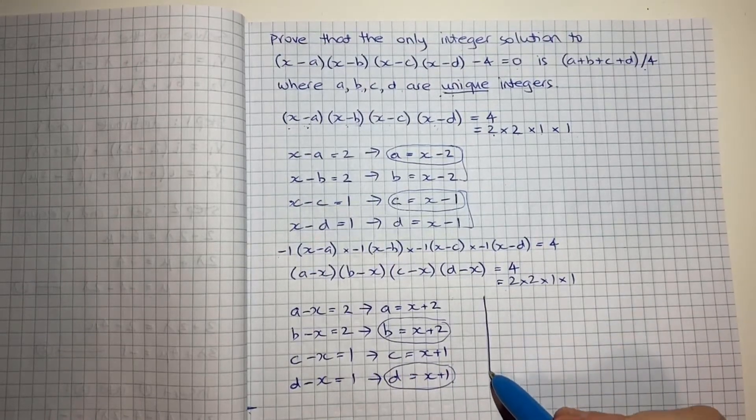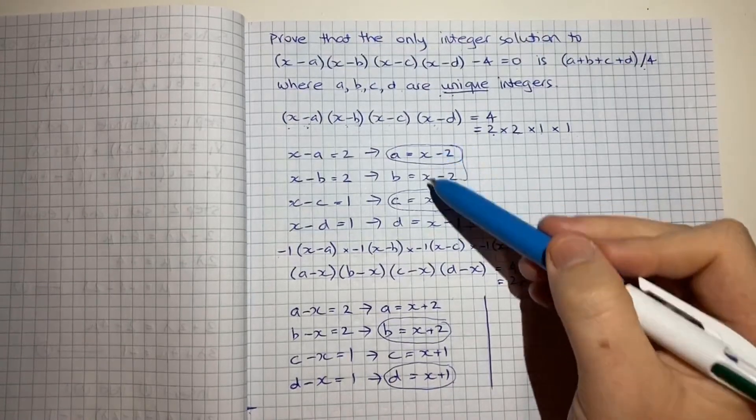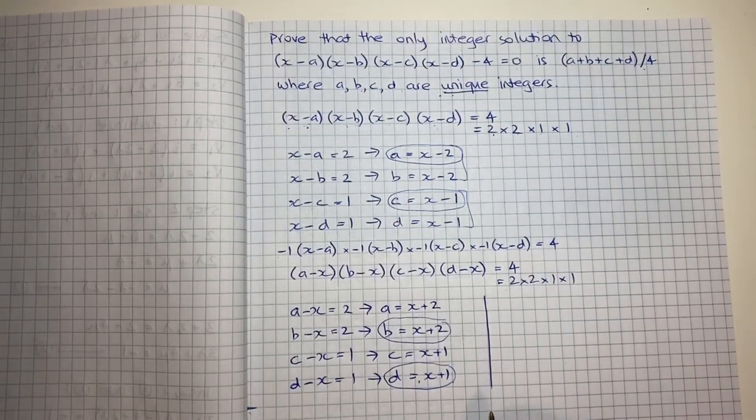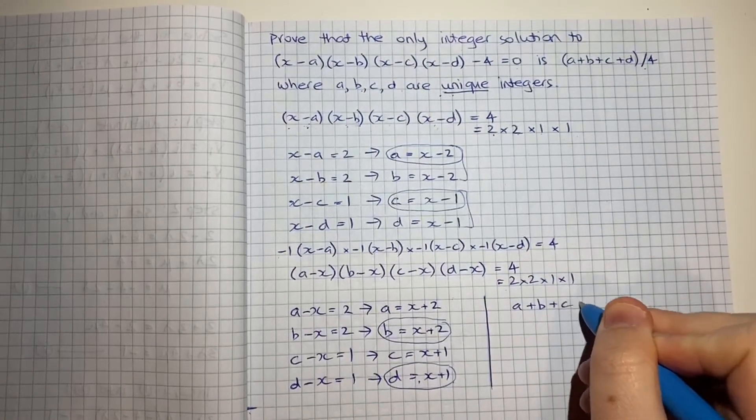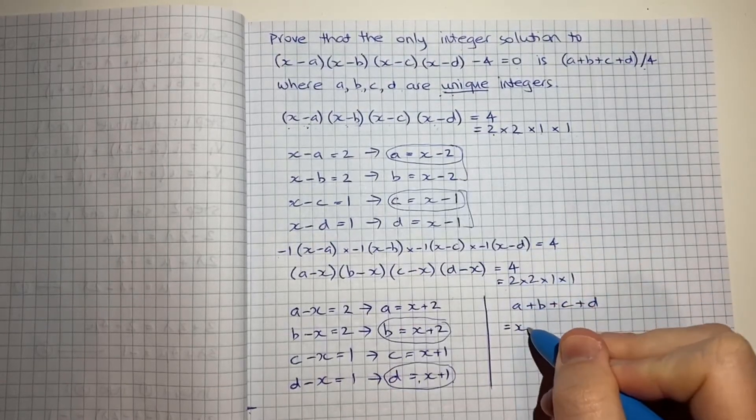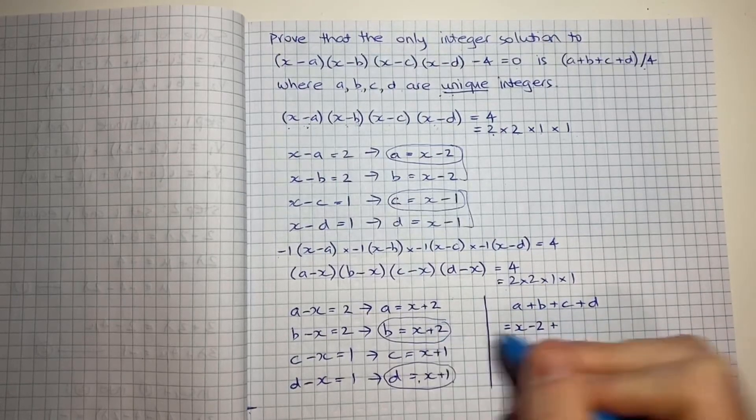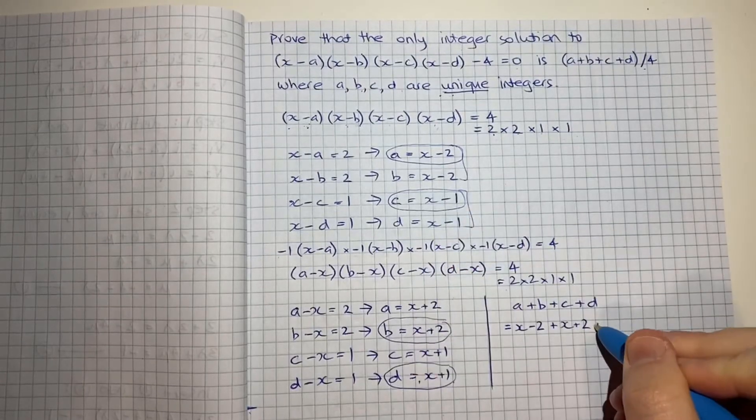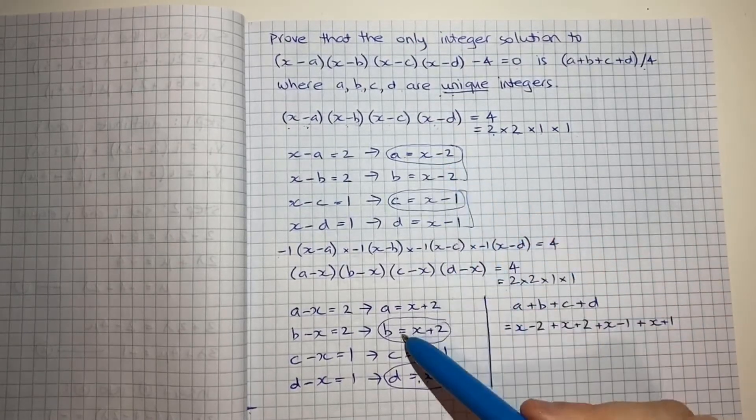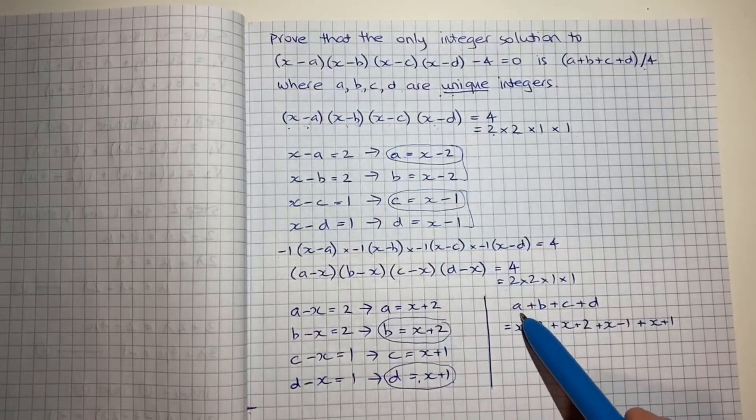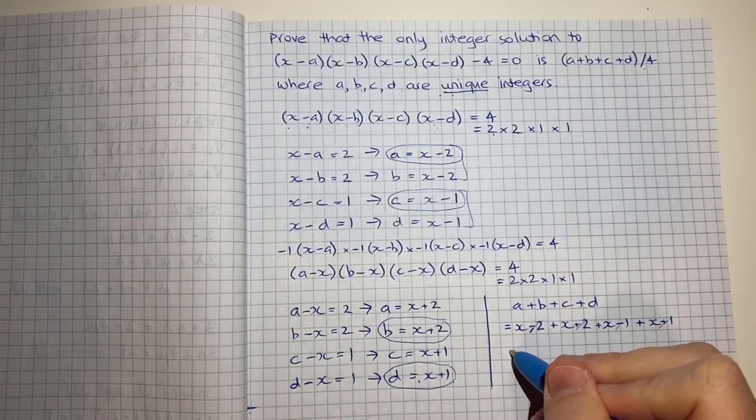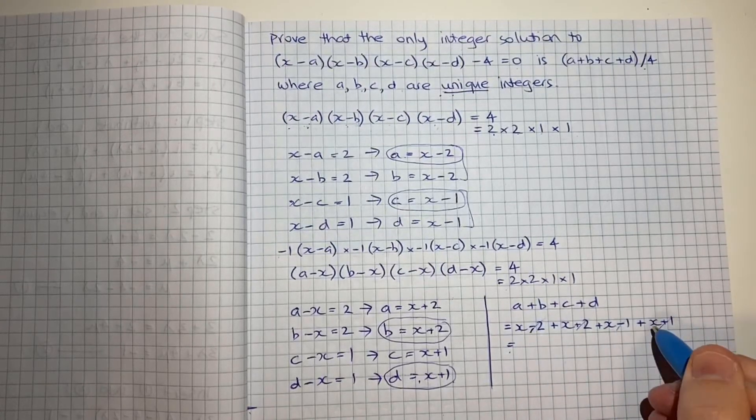So let's just do it. a+b+c+d = (x-2) + (x+2) + (x-1) + (x+1). So all I've done is I've taken the a, the b, the c and the d that I've selected, and I've inserted it into this formula. The -2 and the +2 cancel, the -1 and the +1 cancel, so that gives me x+x+x+x, which is 4x.